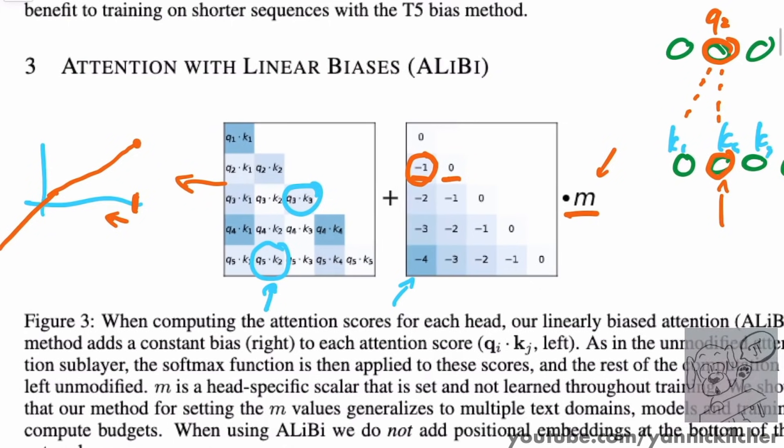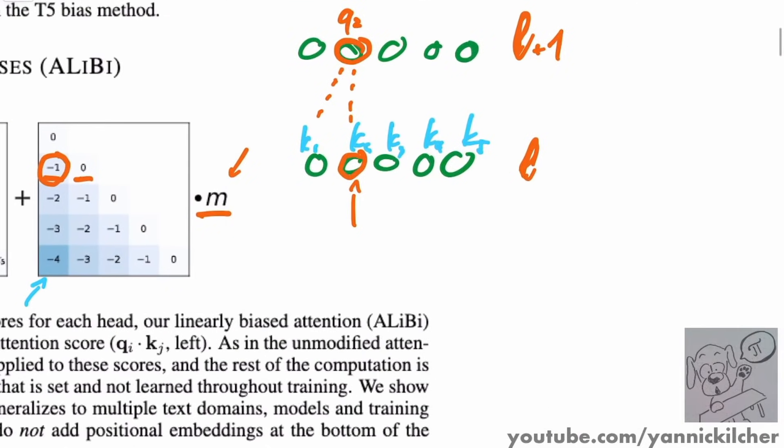Why does, why does this make sense? I was first a bit confused. I'm like, wait, you just subtract, like, it seems like you might want to multiply or something like this. But remember once, for example, for query two here, we built the multiplication. Sorry, this is a bit heavy. We built the multiplication of query two and key two, right? This is an inner product. And we also built the multiplication of query two and key one. Now, what do we do with the two things? We do a softmax, which means that these are numbers and they go into a softmax.